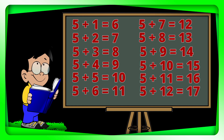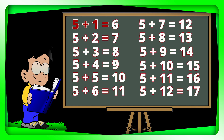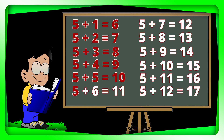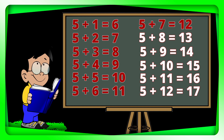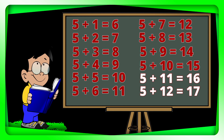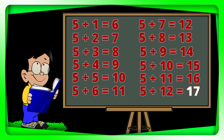Let's do it again. 5 plus 1 equals 6. 5 plus 2 equals 7. 5 plus 3 equals 8. 5 plus 4 equals 9. 5 plus 5 equals 10. 5 plus 6 equals 11. 5 plus 7 equals 12. 5 plus 8 equals 13. 5 plus 9 equals 14. 5 plus 10 equals 15. 5 plus 11 equals 16. 5 plus 12 equals 17.